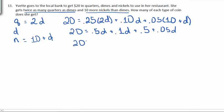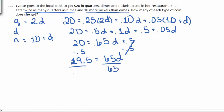We can combine like terms. 0.5 plus 0.1 is 0.6, plus 0.05, is 0.65 d, plus 0.5. We can subtract out the constants. 20 minus 0.5 is 19.5. That's going to be equal to 0.65 d. Divide by the number in front of d, the 0.65, and this gives 30.